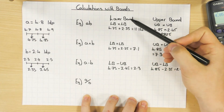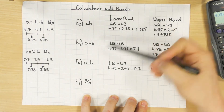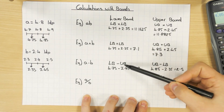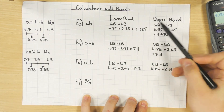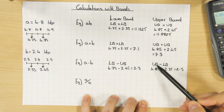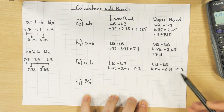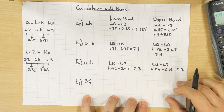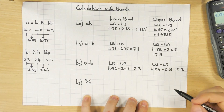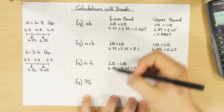An easy way to remember this: if you want the lower bound of the calculation, start with the lower bound, then use the opposite — the upper bound — for the other number. For the upper bound of the calculation, start with the upper bound and take away the lower bound. This same rule applies to division.